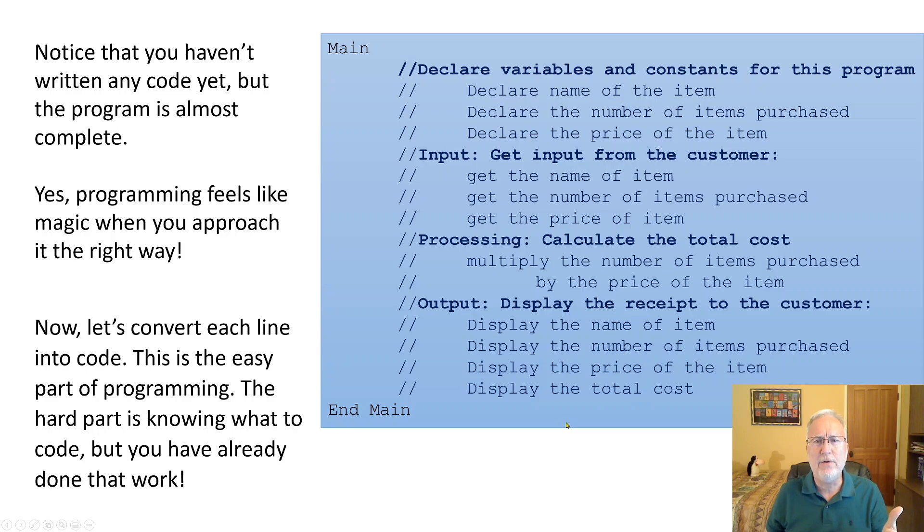So you could write it down in comments like this so you know what has to happen. Now you know what has to happen. And it's already almost code. It's almost finished. And like I said here, programming feels like magic when you approach it the right way. When you approach it the wrong way, you're trying to code it before you really think about what has to happen. It's really hard.